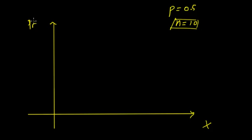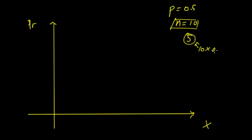If you can't quite get it, that's all right. But if it's half — so half of them are going to be successes — and there are 10 trials, then it's likely that the most likely outcome is going to be 5. So 10 times 0.5 gives us 5, which we'll talk about later. So 5 is going to be the most likely outcome.